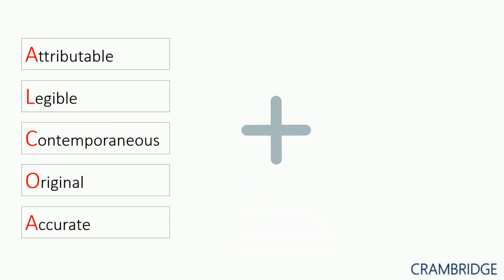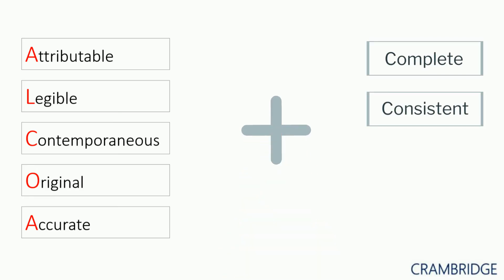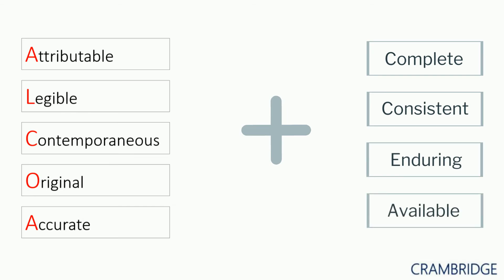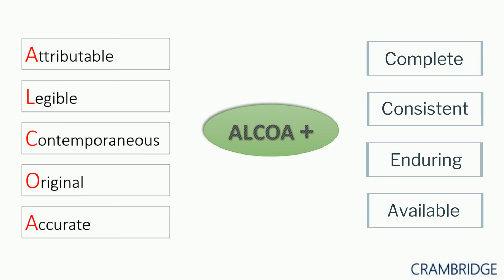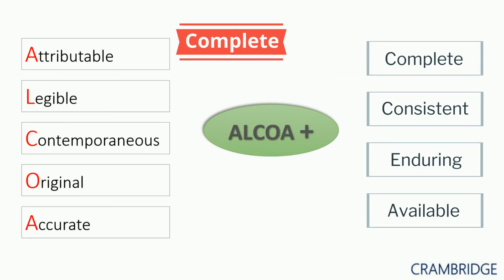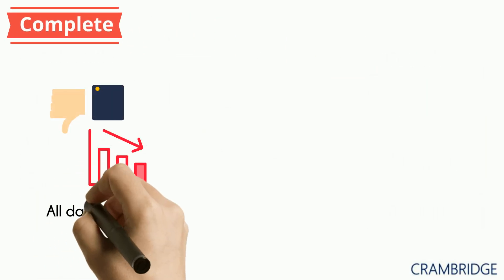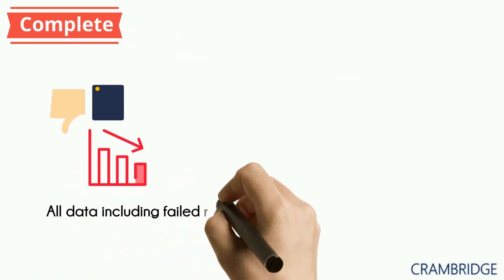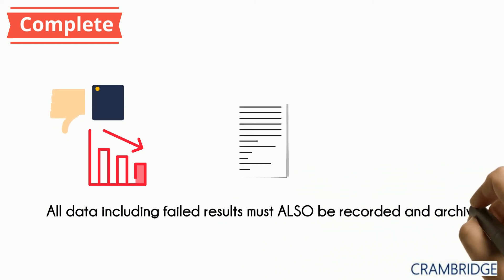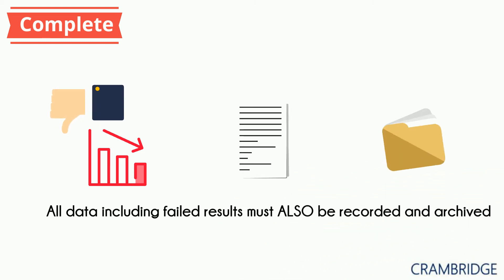In addition to ALCOA, data needs to be complete, consistent, enduring, and available. These four additional parameters make the plus in ALCOA Plus. For data to be complete, all data, including failed results, should be recorded and archived.